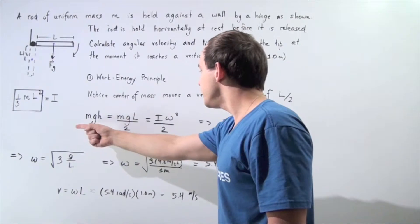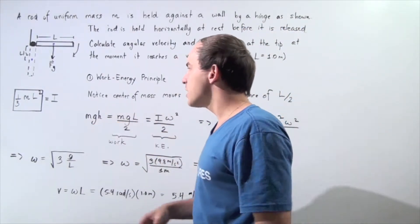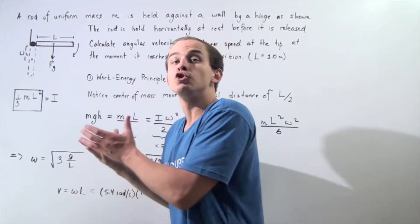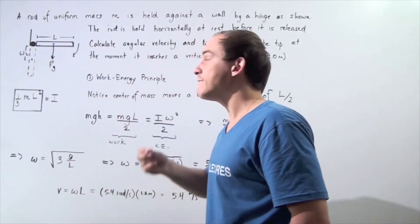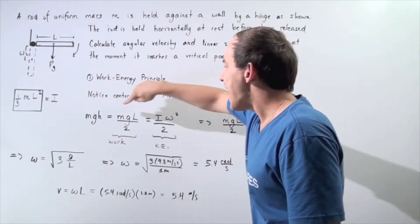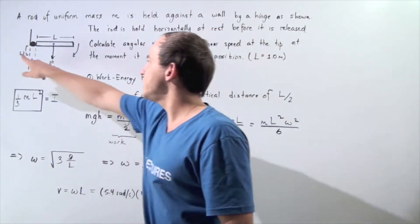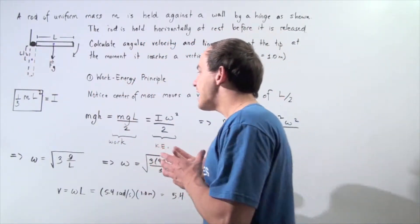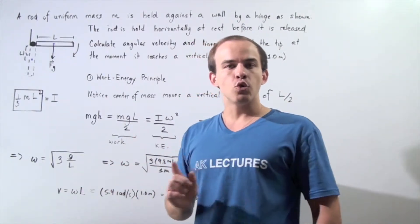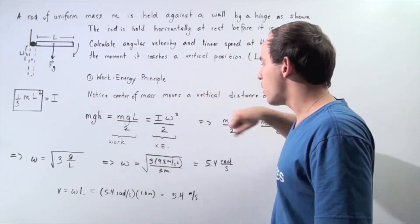So that means we can use the following equation. MGH, the amount of gravitational potential energy our object lost when it traveled a vertical displacement of L divided by 2, is equal to MGL divided by 2, where H is simply L divided by 2. And all of this energy is transformed into rotational kinetic energy given by I omega squared divided by 2.